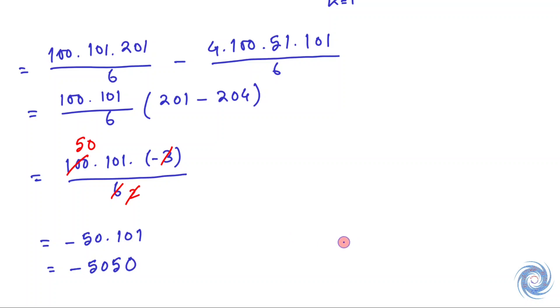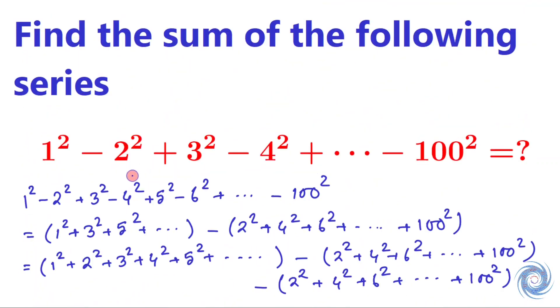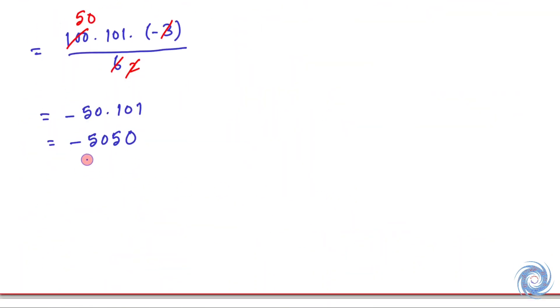The sum of the given series is -5050. We are supposed to find the sum of this series and here we have the sum is -5050. So we are done. Thank you.